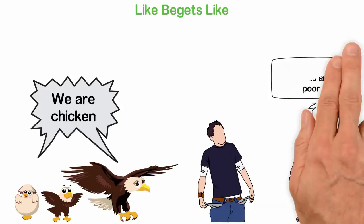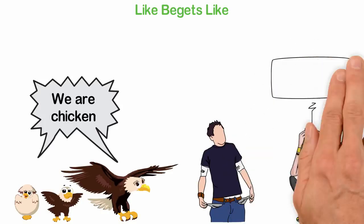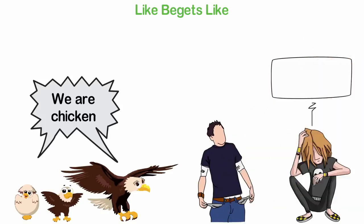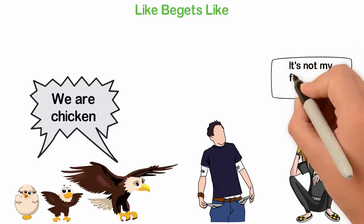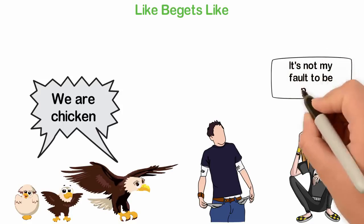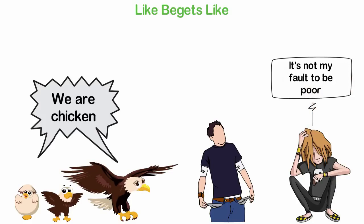It's pretty simple. Whenever you blame someone else for your life, what you're doing is folding your arms and saying, it's not my fault. Let the man who causes man's poverty come and make me rich.